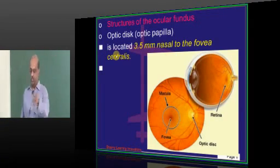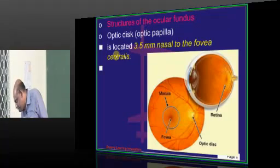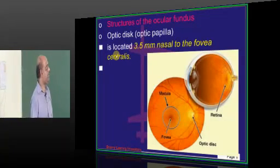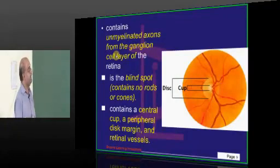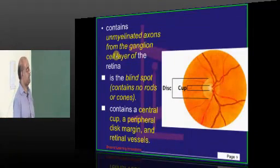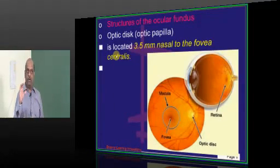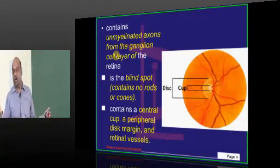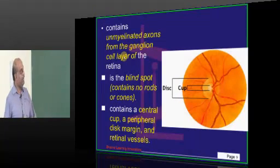In the retina, what is the optic disc, which we have spoken about at length in ophthalmology? It is located 3.5 mm nasal to the fovea centralis. The optic disc basically contains unmyelinated axons from the ganglion layer of the retina. That area is called the blind spot because it does not have rods or cones. It contains one central cup, a peripheral disc margin, and the retinal vessels passing through it.